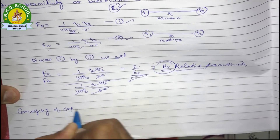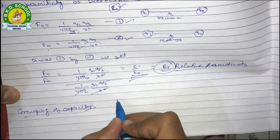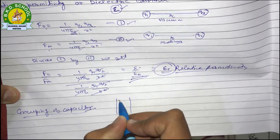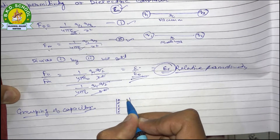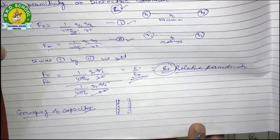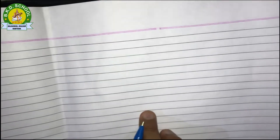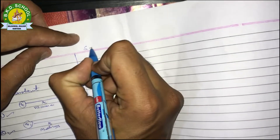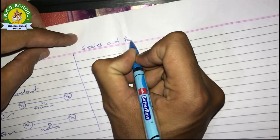Now let's move to grouping of capacitors. Grouping of capacitors is different from grouping of resistances. We will do it in series and parallel. In series, capacitors are connected end to end — we have one capacitor, then another, then another. Here we have three capacitors connected in series.